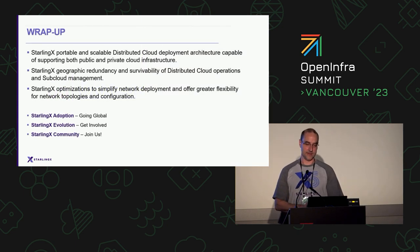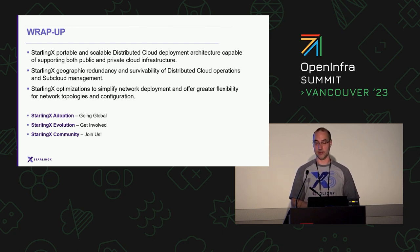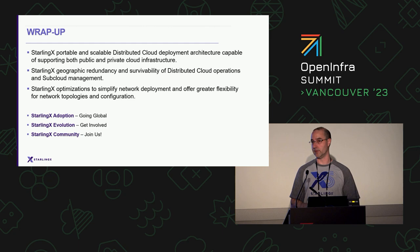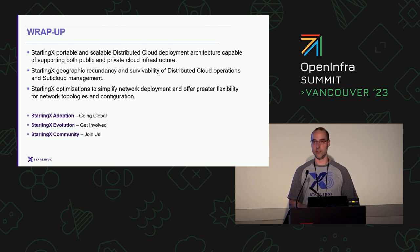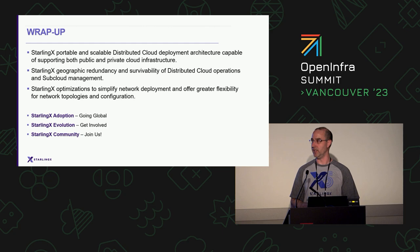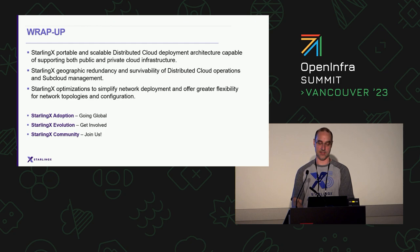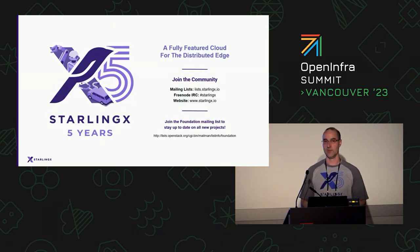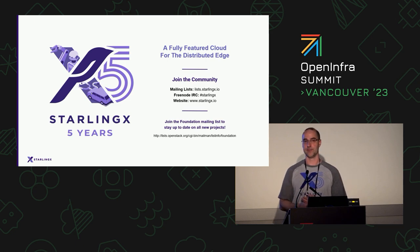Let's do a quick wrap-up. What we looked at today was a new portable and scalable distributed cloud deployment architecture for both public and private cloud, new geographic redundancy and survivability of distributed cloud operations for both private and public cloud, and network optimizations to help operators reduce overall complexity of their network planning. There are many new industries we're getting into with StarlingX, so we welcome contributors. If you're interested, come to starlingx.io or join the StarlingX Discuss forum. Thank you very much.